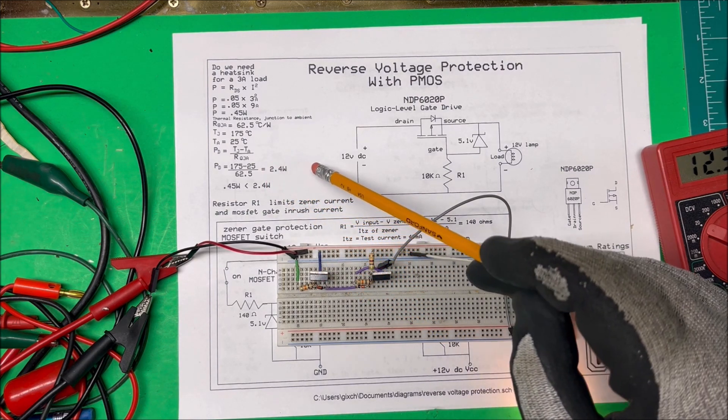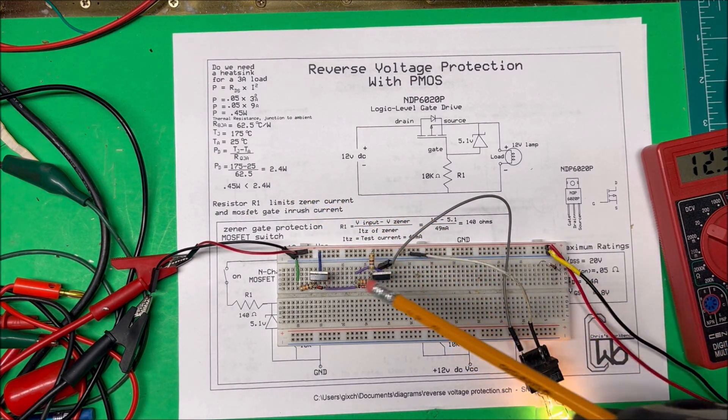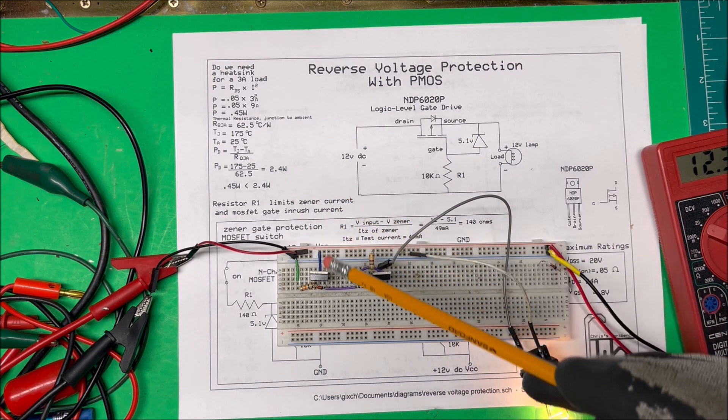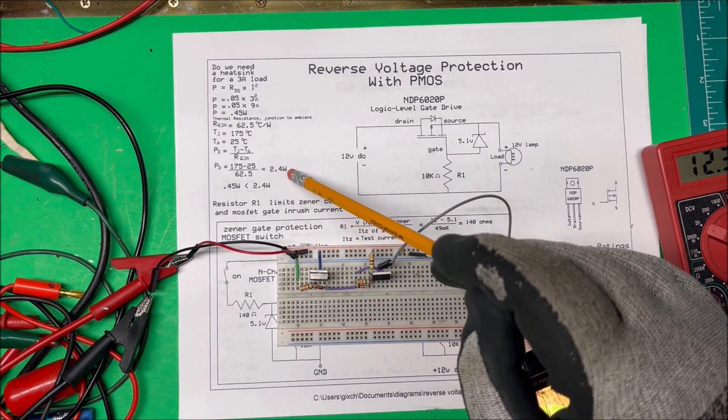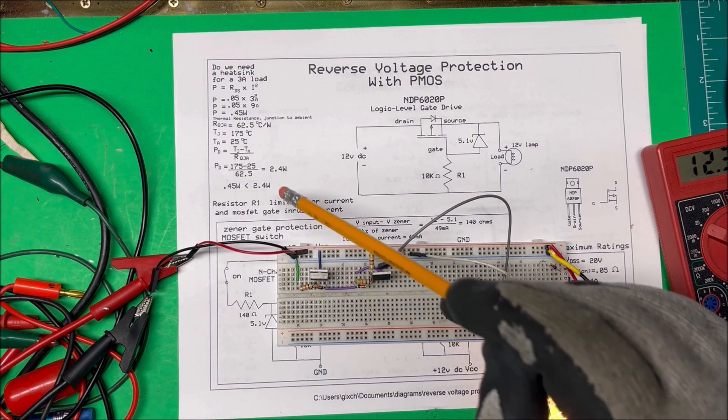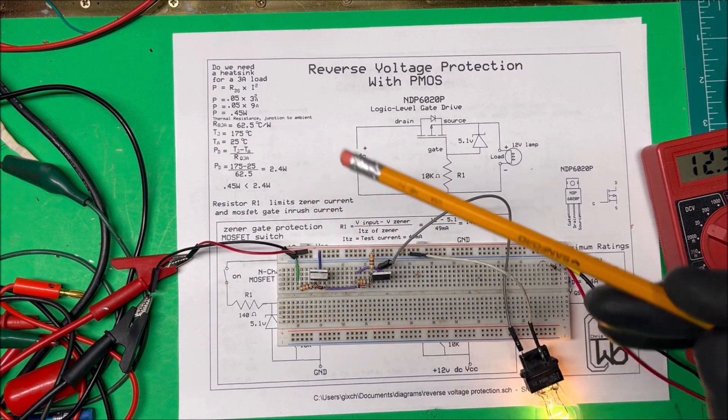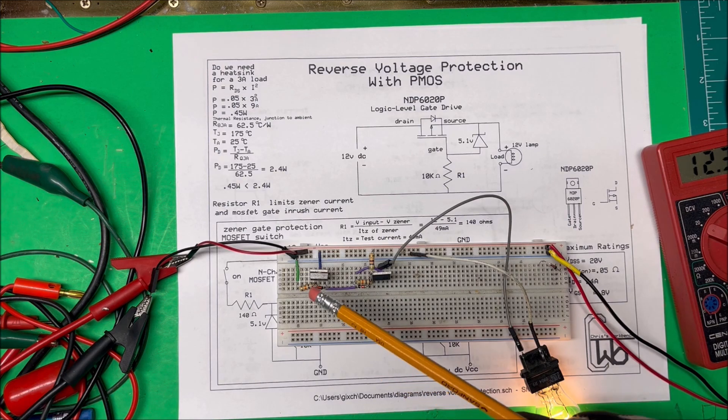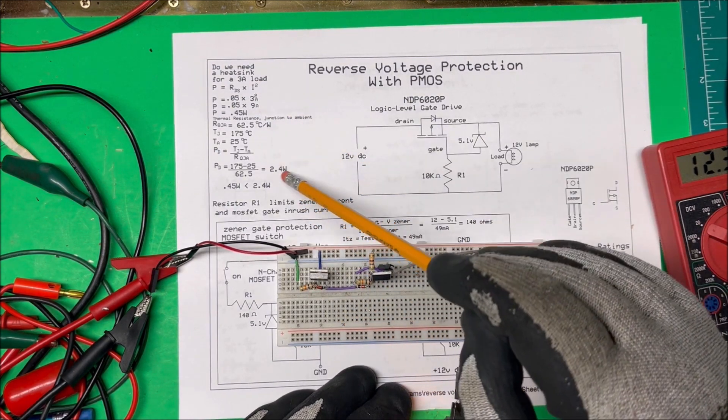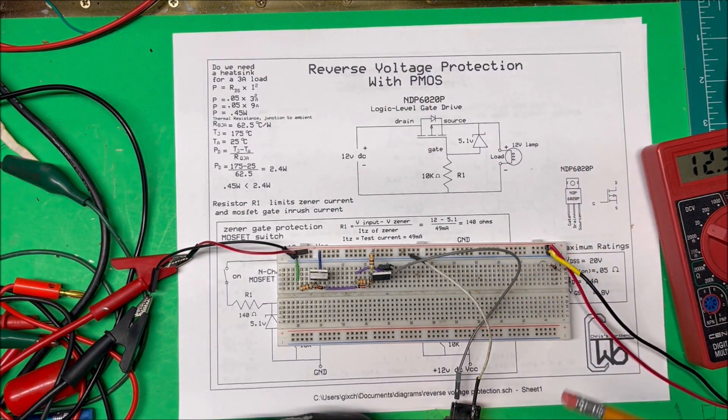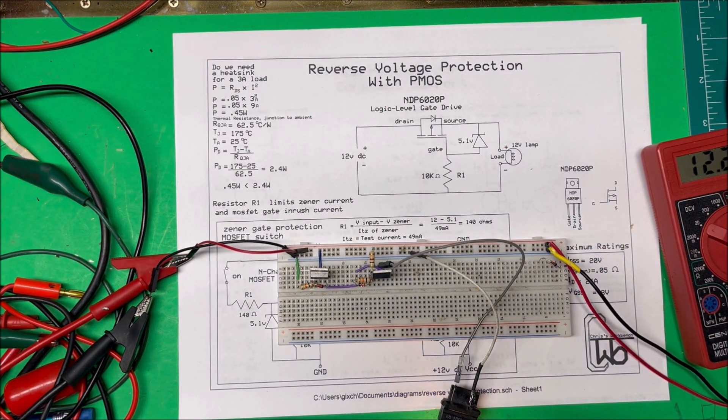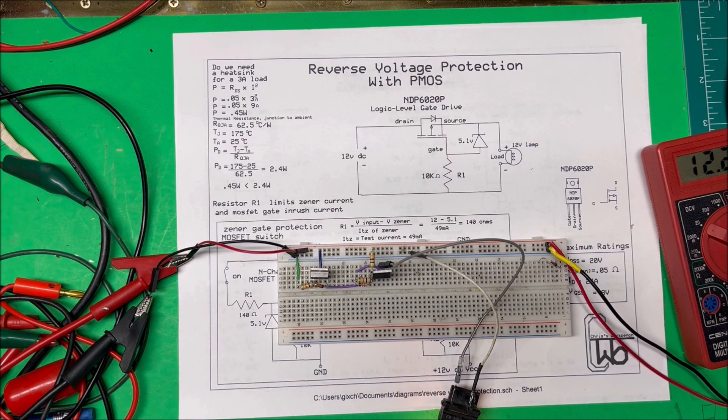If you run more current through there without a heat sink, you can't go up to 60 watts—you can only go up to 2.4 watts. Anything greater than that, you have to dissipate that heat through a heat sink. So that's a way to calculate to see if you actually need a heat sink or not. At three amps, we're going to be pretty good there. So that's reverse voltage protection, and thank you.